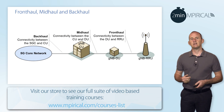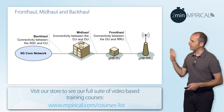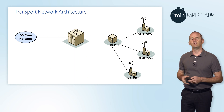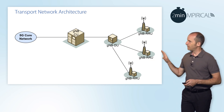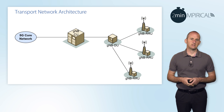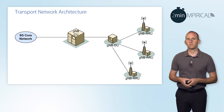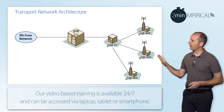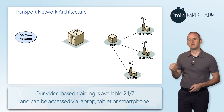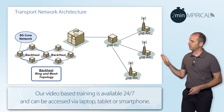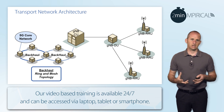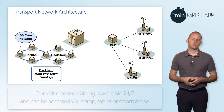Just so you've got an idea of the actual transport network architecture, we've got a slightly different view here. You can see it can potentially be a one-to-many relationship between these different network entities. Connecting the 5G core network to the centralized units, typically you will see deployed either a ring or a mesh type topology for the transport network.